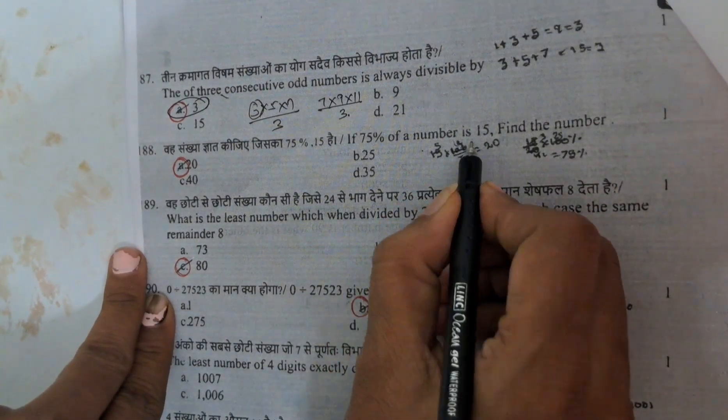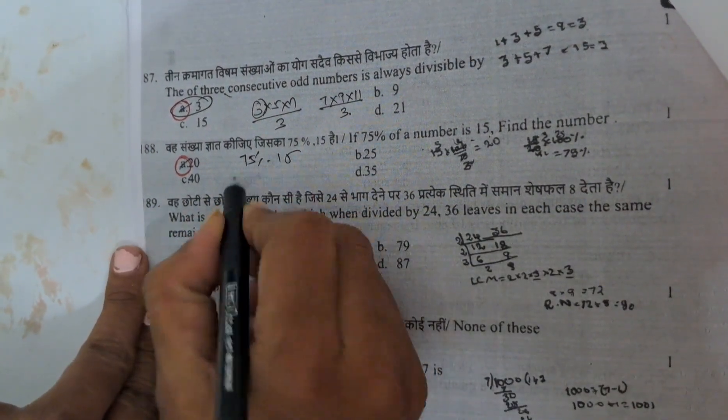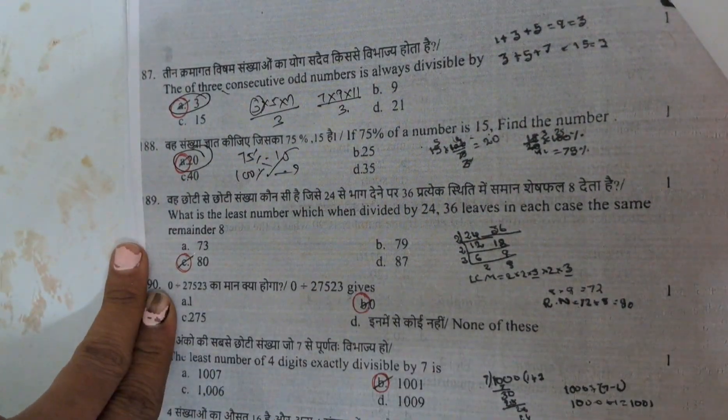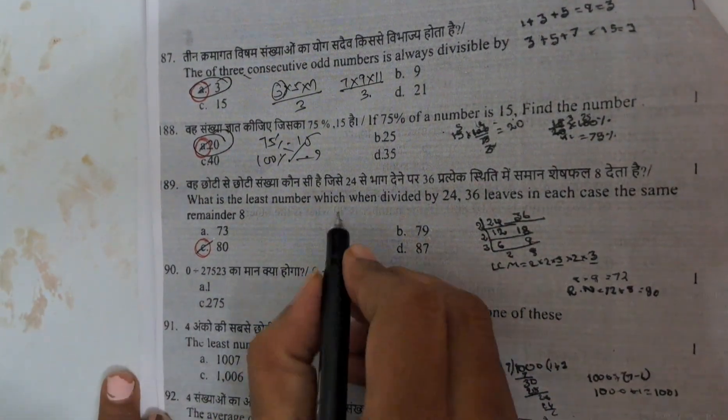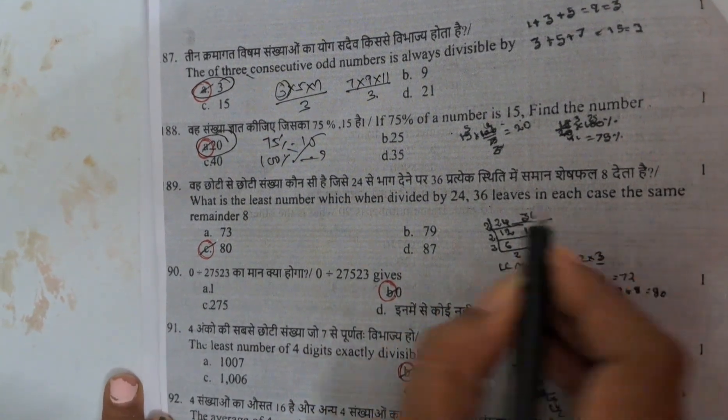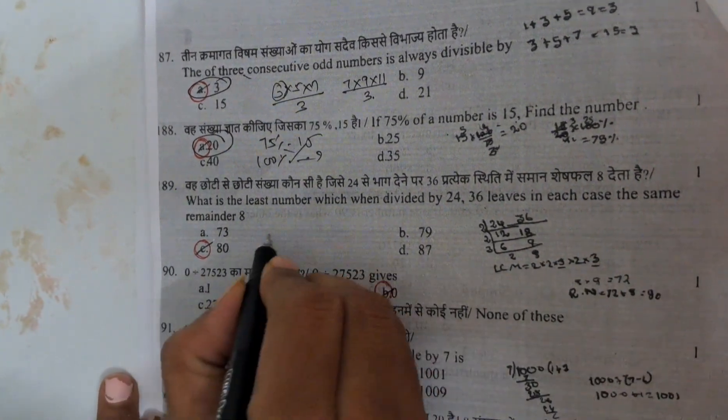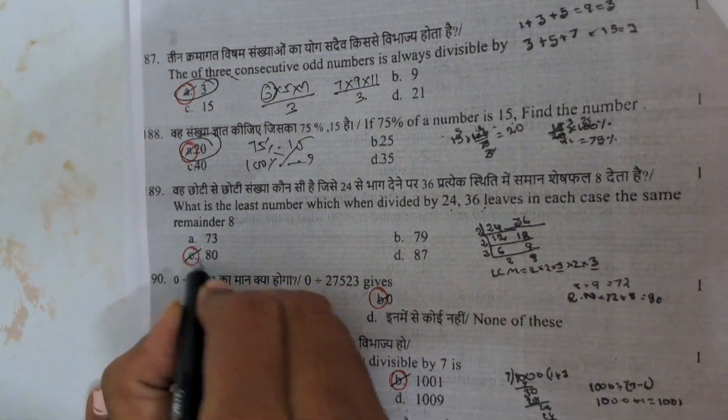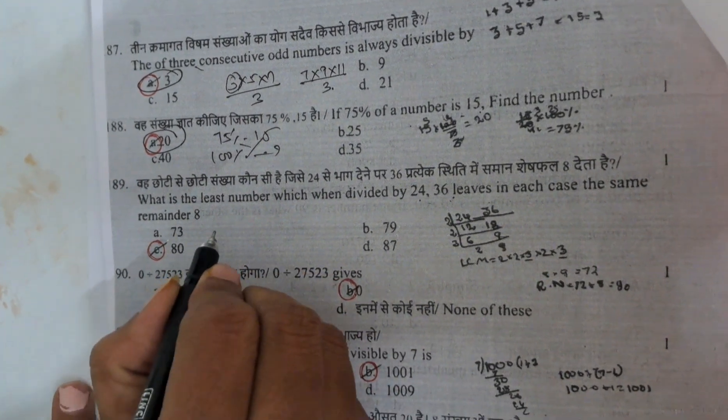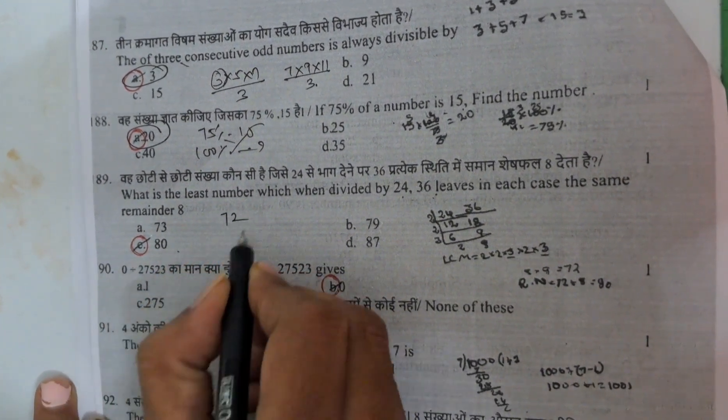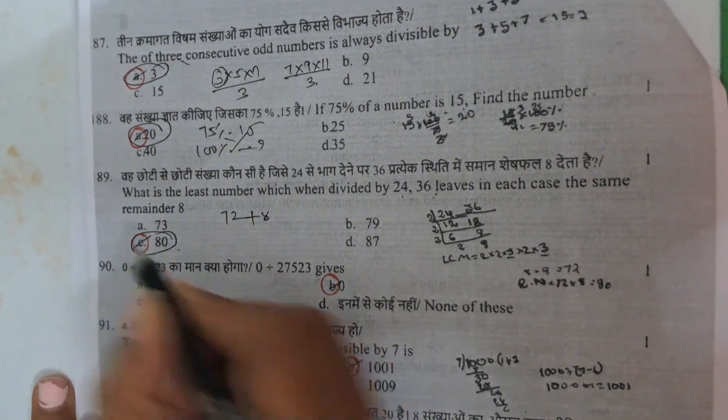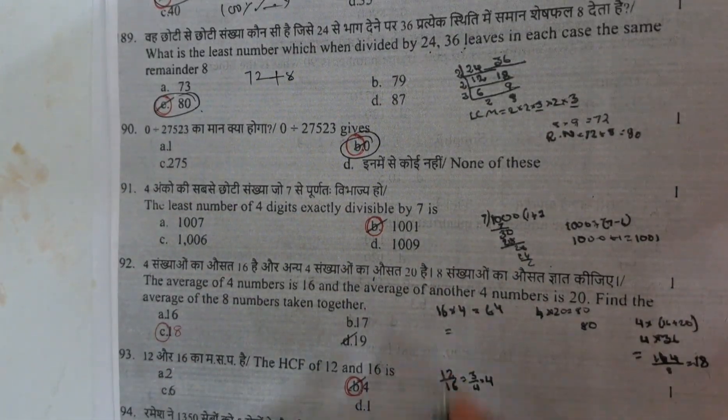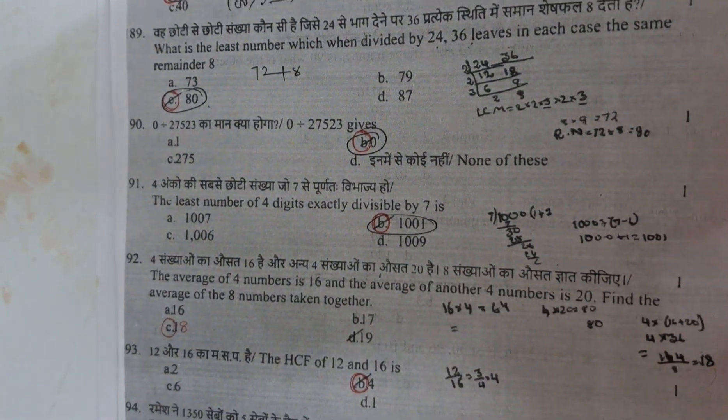If 75% of a number is 15, 75% equals to 15 means 100% equals to how much we need to find. That answer is 20. And next, what is the least number which when divided by 24, 36, least in case same remainder 8. Here 24, 36. If you divide, means first we need to do 24 and 36, what is the LCM? That is 72 plus 8, if you do 80.